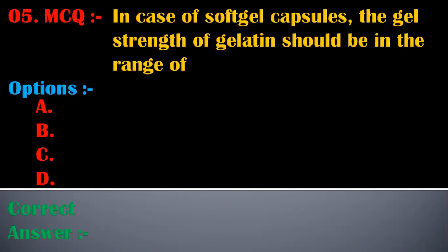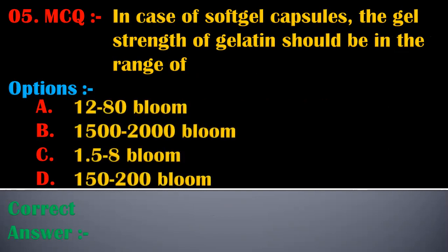The fifth MCQ is: in the case of soft gel capsules, the gel strength of gelatin should be in the range of — options are 12 to 82 bloom, 1500 to 2000 bloom, 1.8 to 8 bloom, or 150 to 200 bloom. The correct answer is 150 to 200 bloom.